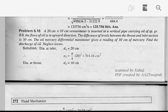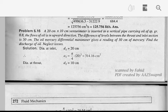The next problem: A 20 cm by 10 cm venturimeter is inserted in a vertical pipe carrying oil of specific gravity 0.8. The flow of oil is in the upward direction. The difference of levels between the throat and inlet section is 50 cm. The oil-mercury differential manometer gives a reading of 30 cm of mercury. Find the discharge of oil, neglecting losses. D1 is 20 cm, D2 is 10 cm.